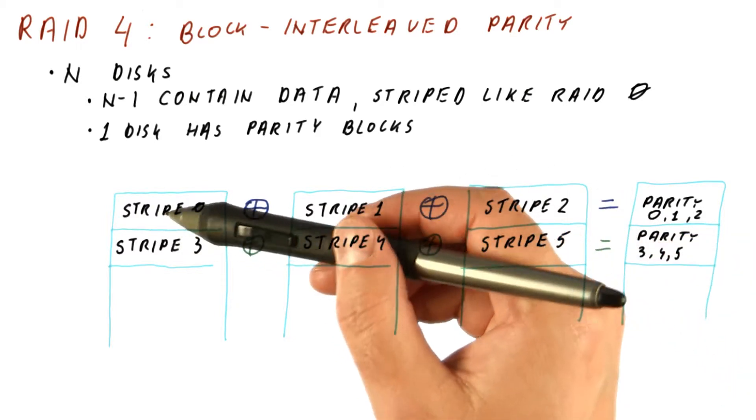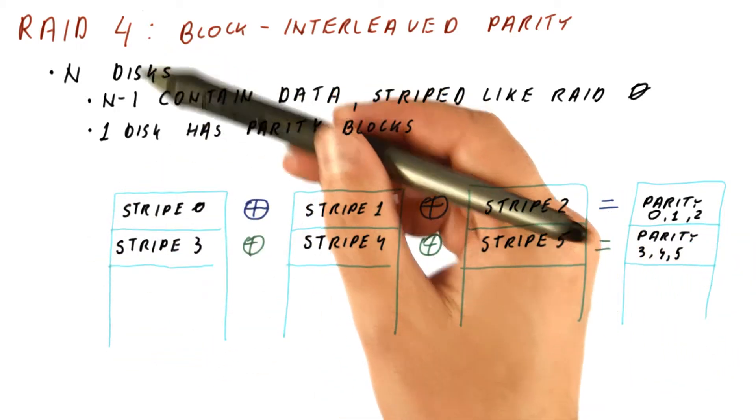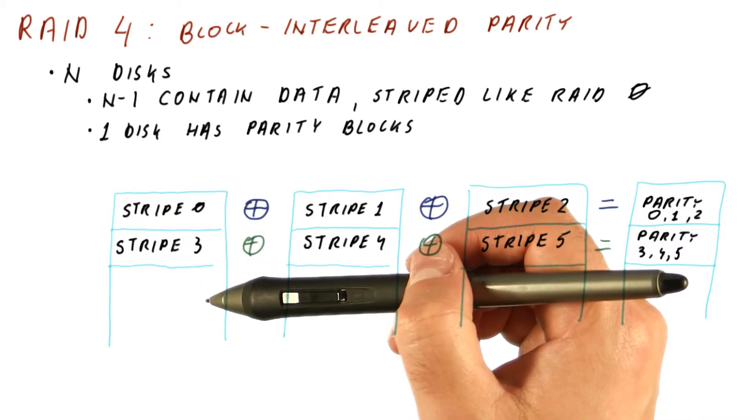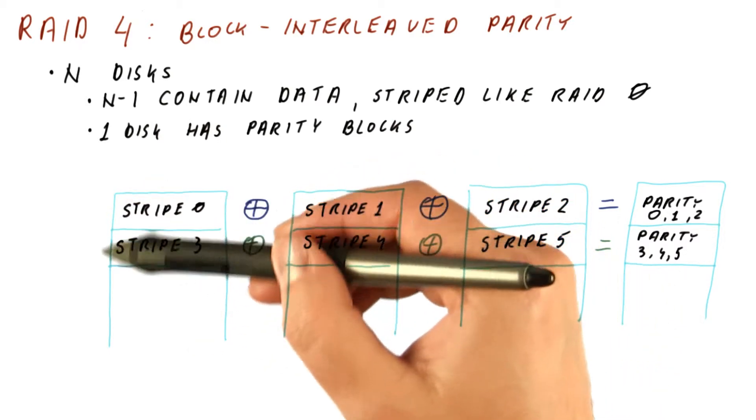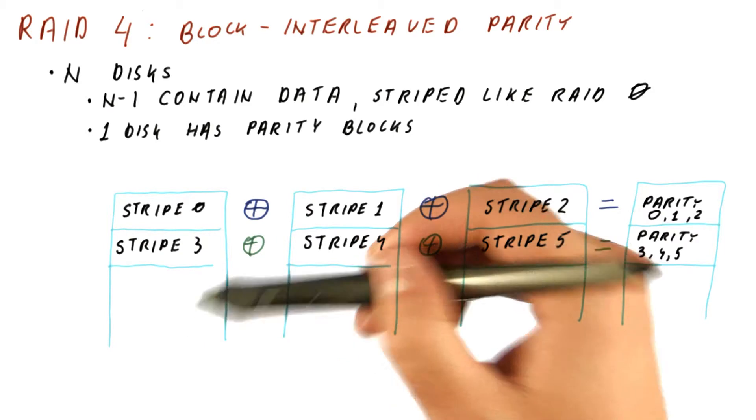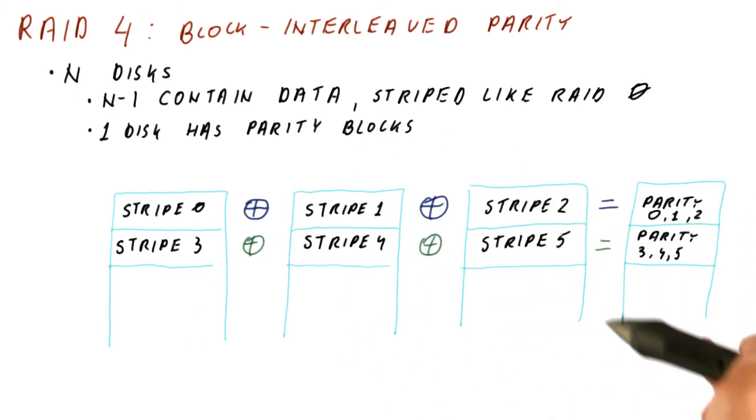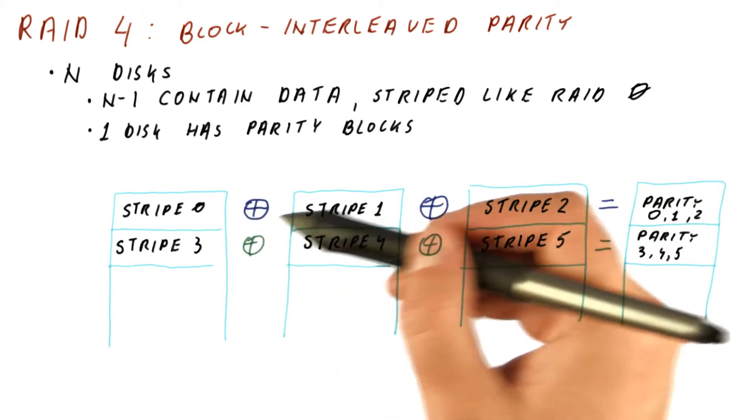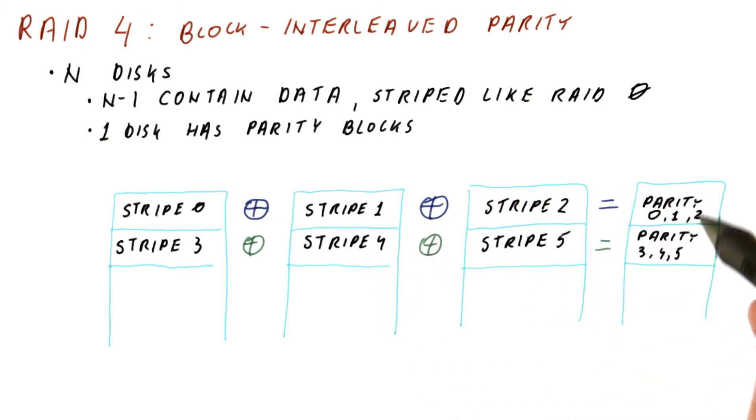Because here we will store the bits of the data. And here we will store the same bits. Because a bit, when you don't XOR it with anything, you just put it here.